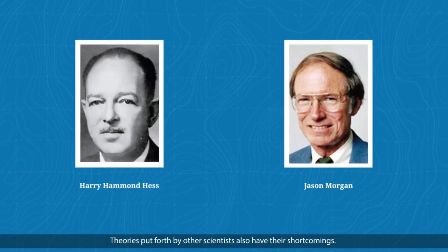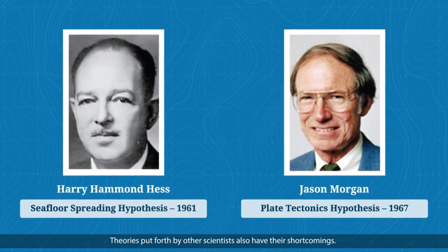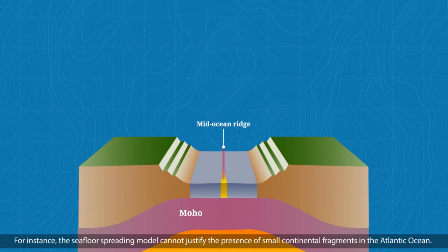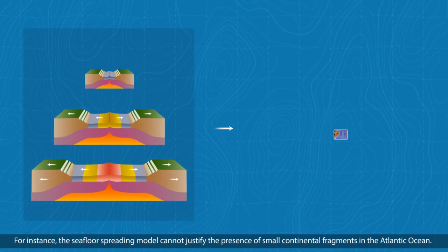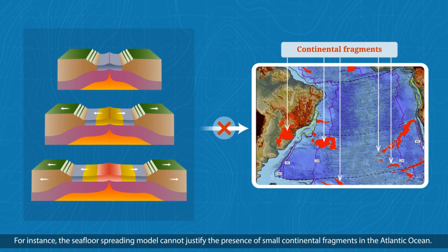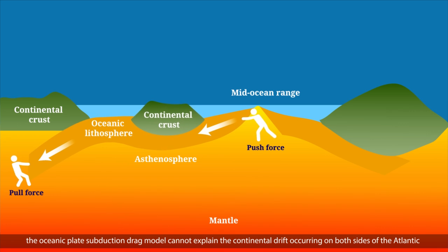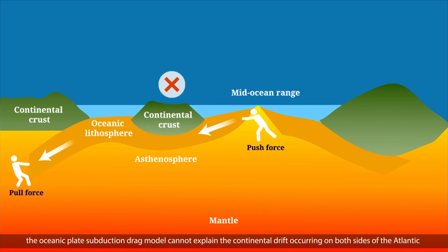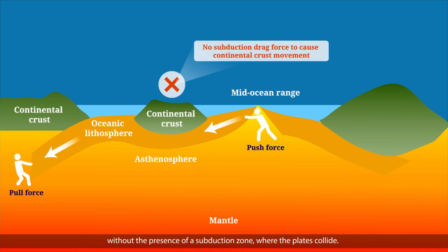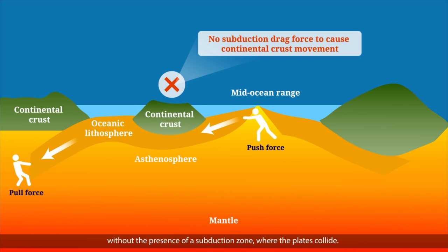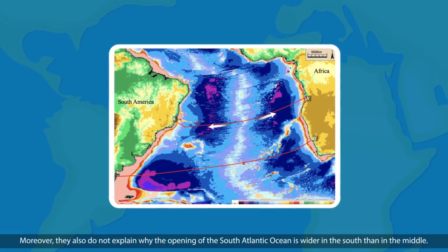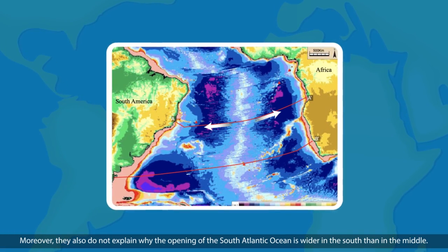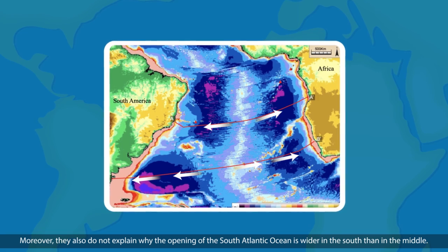Theories put forth by other scientists also have their shortcomings. For instance, the seafloor spreading model cannot justify the presence of small continental fragments in the Atlantic Ocean. On the other hand, the oceanic plate subduction drag model cannot explain the continental drift occurring on both sides of the Atlantic without the presence of a subduction zone, where the plates collide. Moreover, they also do not explain why the opening of the South Atlantic Ocean is wider in the south than in the middle.